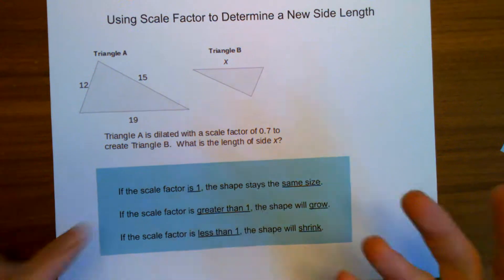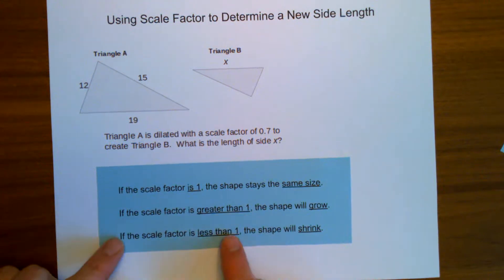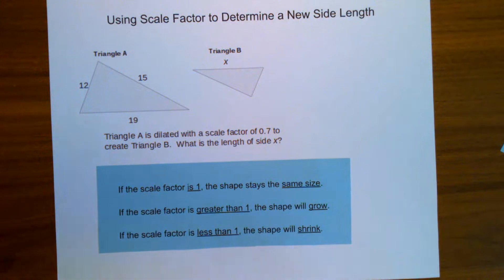If the scale factor is greater than 1, when you multiply by a number greater than 1, the answer grows. The number gets bigger. So the shape will grow when the scale factor is greater than 1. If the scale factor is less than 1, the shape will shrink. Multiplying by 0.5, for example, is going to cut a number in half. So the shape should shrink in that case.